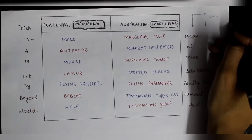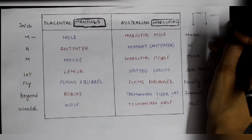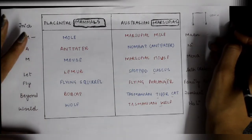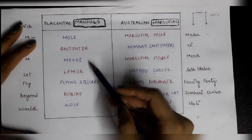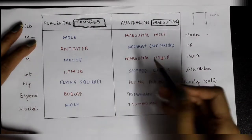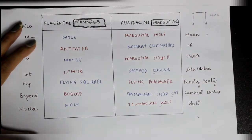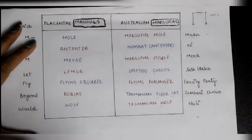So who showed this? These are shown by placental mammals and Australian marsupials. This topic is very important for the NEET question paper, as in NEET there can be four options given — for example, anteater, lemur, flying squirrel, and marsupial mouse — and you have to identify which of the four options is an Australian marsupial.